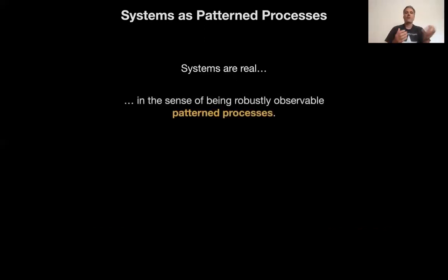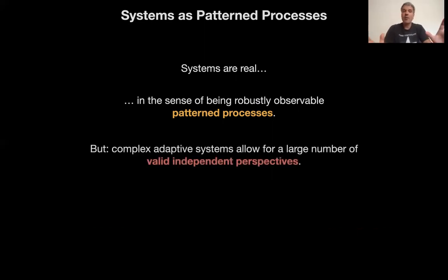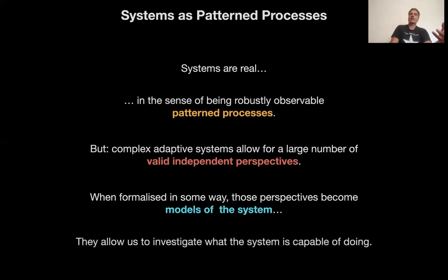The basic characteristic of a system is its essential invariance beyond the much more variant flux and fluctuations of its constituents — it is defined at the system level, not necessarily at the level of the components. This is exactly the opposite of a machine, in which the structure of the product depends crucially on strictly predefined operations of the parts. In the system, the structure of the whole determines the operation of the parts; in the machine, the operation of the parts determines the outcome. Systems are real — they're not just in our heads. They are robustly observable patterned processes. Complex adaptive systems allow for a large number of valid independent perspectives, and when formalized, those perspectives become models of the system, which we can use to study what the system is capable of doing. We'll go into this in the next lecture.